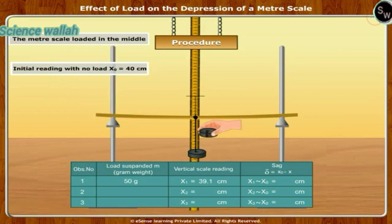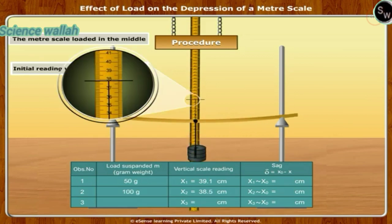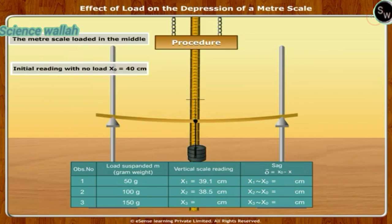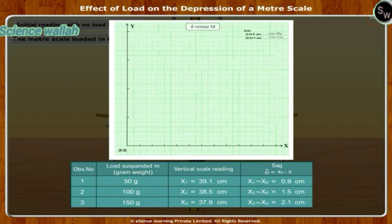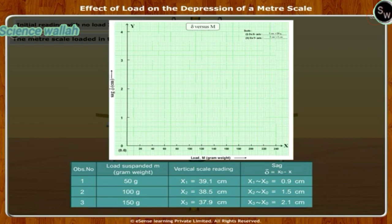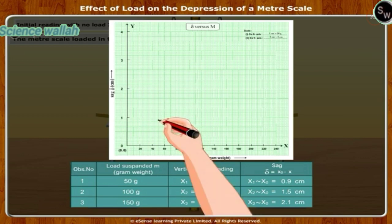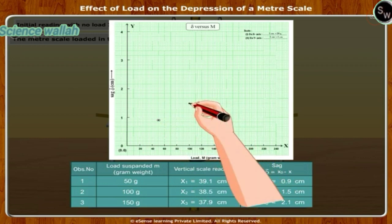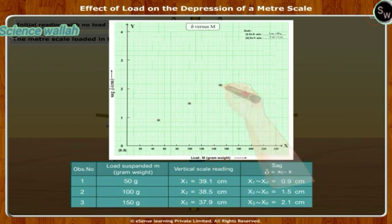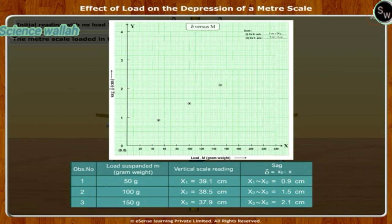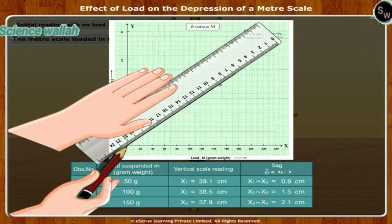Take more observations by adding slotted weights to the hanger. Note the corresponding readings. Find the sag delta for each load M. Plot a graph of delta (in centimeters) against M (in gram-weight). The graph is as shown in the figure.